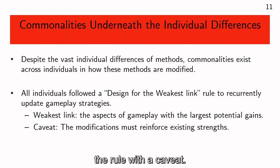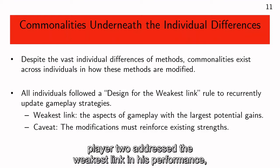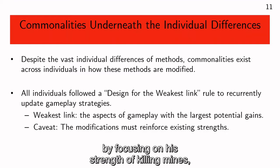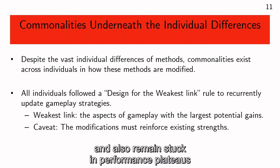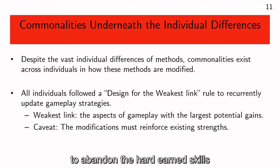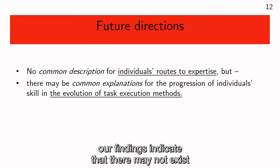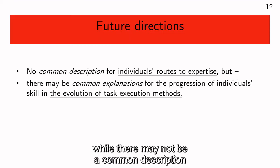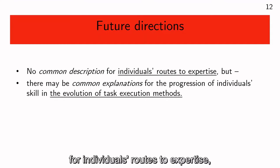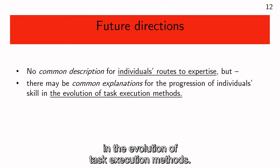Generally, the players applied the rule with a caveat: the modifications must reinforce or complement existing skills. An example is our worst player — Player 2 addressed the weakest link in his performance by focusing on his strength of killing mines, rather than dealing with both the fortress and the mines simultaneously. This caveat suggests one reason for how individuals may get stuck in performance plateaus due to suboptimal methods: it is simply hard to abandon hard-earned skills and start anew. Taken together, our findings indicate there may not exist a simple function like the power function that can explain all individuals' learning generally.